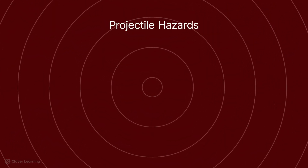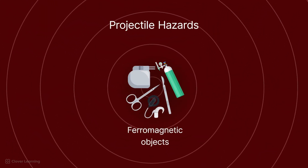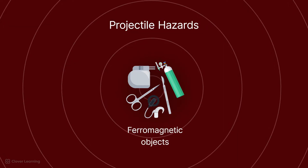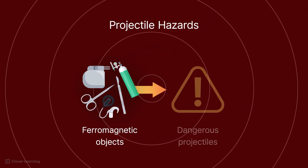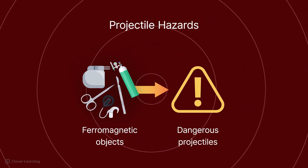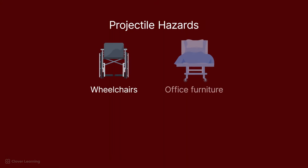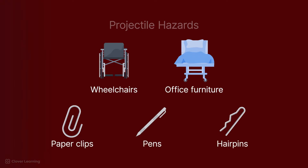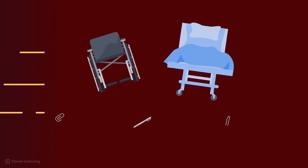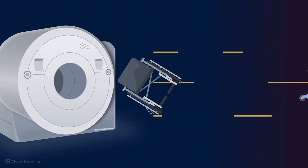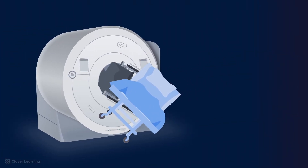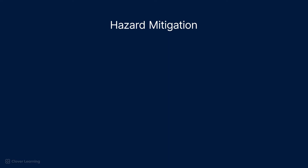Next, we need to discuss the hazards of projectiles in the MRI environment. The powerful static magnetic field can turn ferromagnetic objects into dangerous projectiles. These dangers include obvious threats such as wheelchairs and office furniture, and small objects that a technologist might not notice, like paperclips, pens, or hairpins. Any of these items could cause serious injury if they are drawn into the magnet.